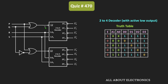Whenever the enable input is 0, then based on the inputs at the address lines, one of the outputs will become 0. That means whenever both A0 and A1 are 0, then Y0 output becomes 0 and the rest — Y1, Y2, and Y3 — remain 1. Likewise, when A0 and A1 are both 1, then Y3 output becomes 0. So when the enable input is 0, based on the address line inputs, one of the outputs will become 0.